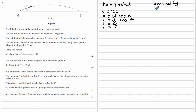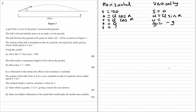Vertically, the displacement for the whole journey is 0. The initial vertical velocity is u sin alpha. The acceleration is negative g, acting downward, since the initial velocity is acting upward. The time t is the same for both the horizontal and vertical journeys.